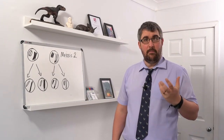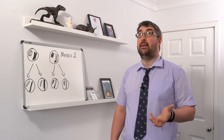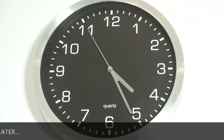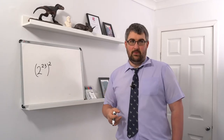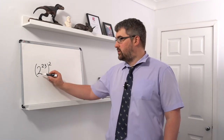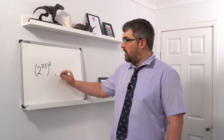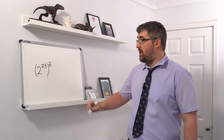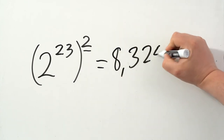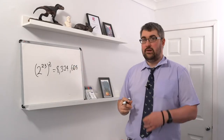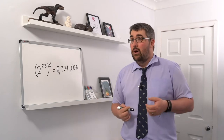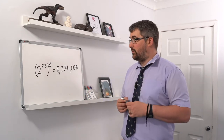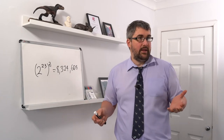In humans the number of possible chromosomal combinations is enormous. To calculate it: two to the power of the number of pairs (2²³), then squared to account for fertilization where two random gametes fuse. This gives 8,324,608 possible gamete combinations between two individuals. This explains why siblings show such huge variation — there is an enormous amount of variation produced through meiosis, assuming you're not an identical twin.